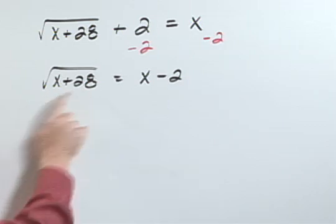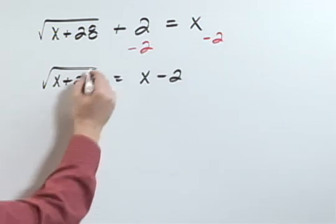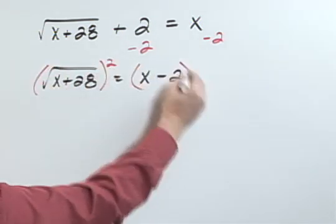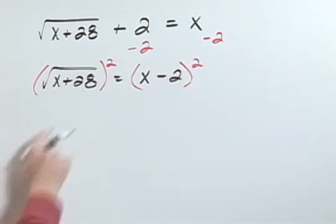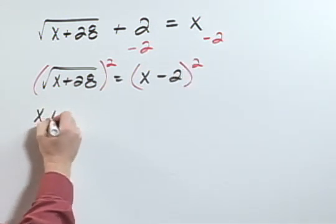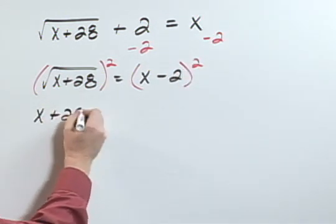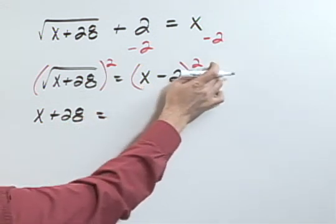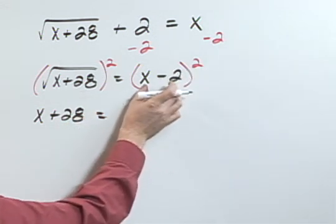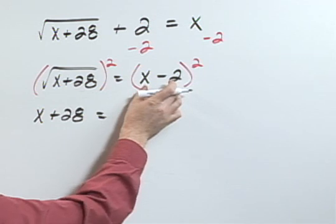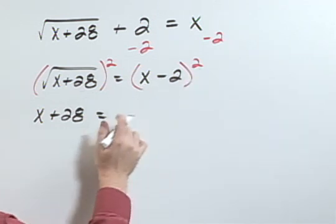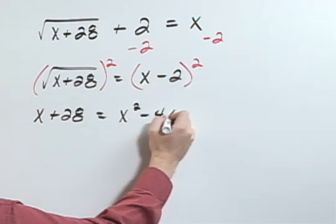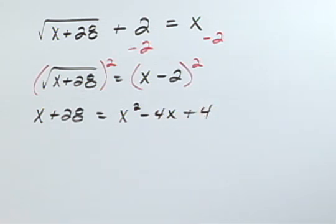Now that this square root is by itself, I can eliminate it by squaring both sides. My left side then becomes x plus 28 equals... Now remember, I'm going to do binomial expansion there. x minus 2 times x minus 2 would be x squared minus 4x plus 4.